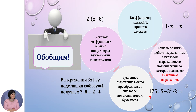Обобщим и скажем, что числовой коэффициент обычно пишут перед буквенными множителями. Например, число 2 записано перед буквенным выражением (x плюс 8). Коэффициент, равный единице, принято опускать: то есть произведение 1 умножить на букву x можно записать просто как буква x. Если выполнить действия, указанные в числовом выражении, то получится число, которое называем значением выражения.